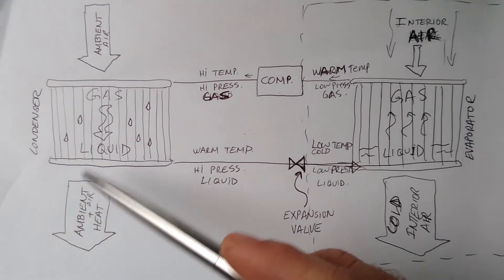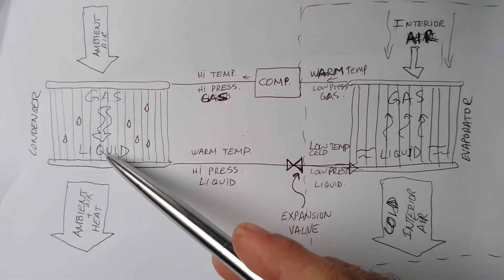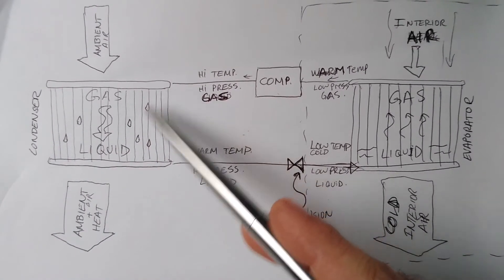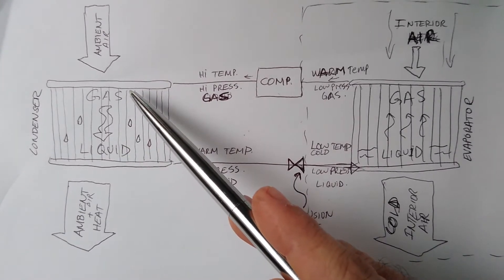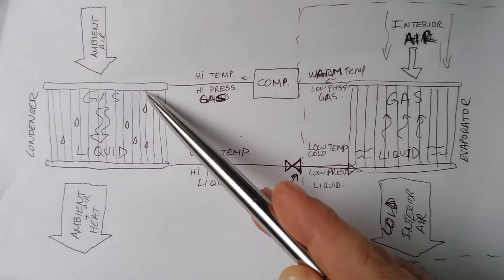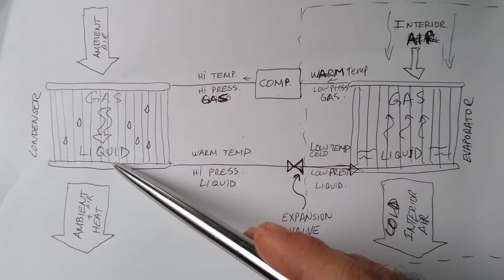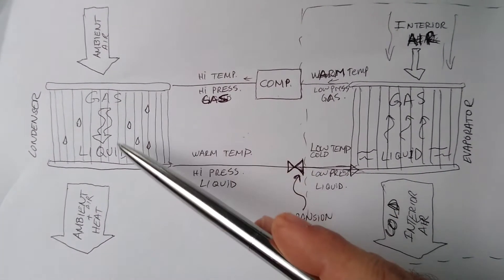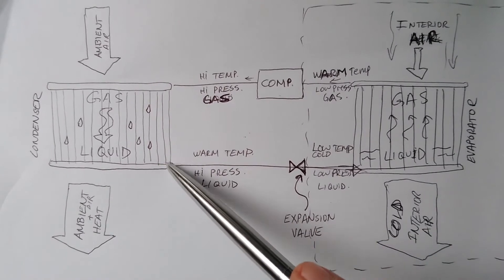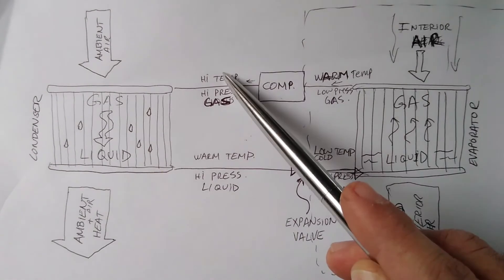When the ambient air draws heat away from the gas, the gas can become cold enough to condense into a liquid. The pressure is still high — only slightly lower than before — but the refrigerant is now in liquid form. In the condenser, the gas goes from gas to liquid, and that phase change happens because we're taking heat away from it.